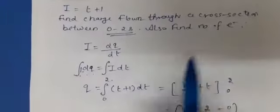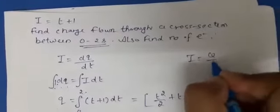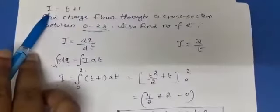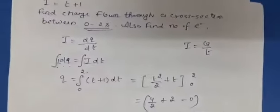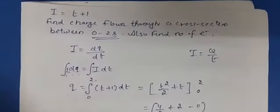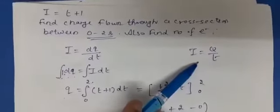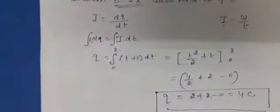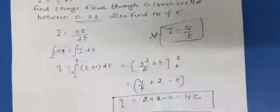You cannot directly use Q = IT here, or I = Q/T. Why did we use the integration method and not the direct formula? The reason is that current is represented by a variable quantity. If current was given to be constant, then you could directly use Q = IT. But if the current is variable, then you have to use this integration method. So this is an important point which you need to understand.